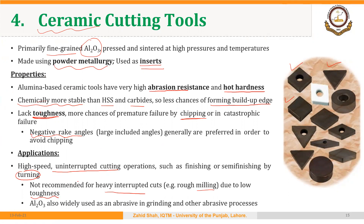Aluminum oxide is also widely used as an abrasive in grinding and other abrasive processes. It is one of the materials used to make grinding wheels as well.